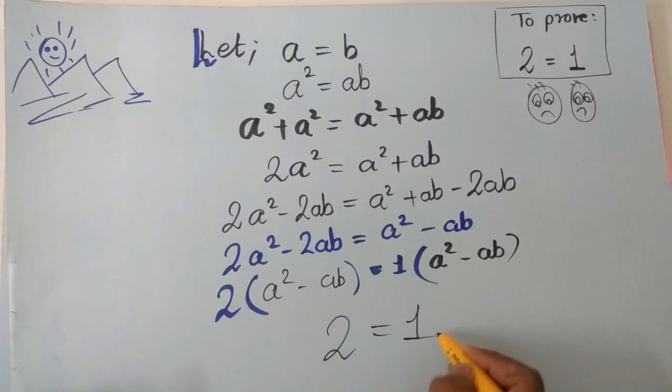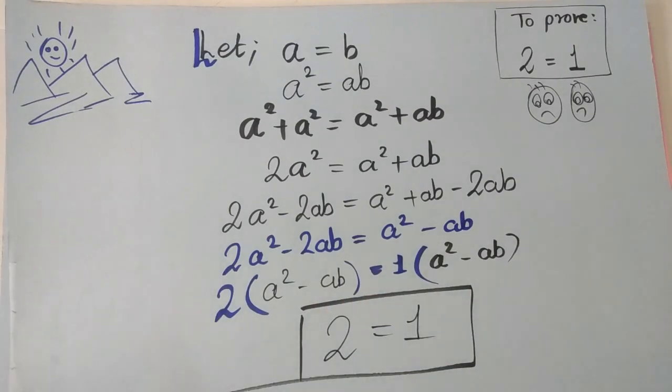Two equals one. That's the amazingness of mathematics. Can you find the mistake?